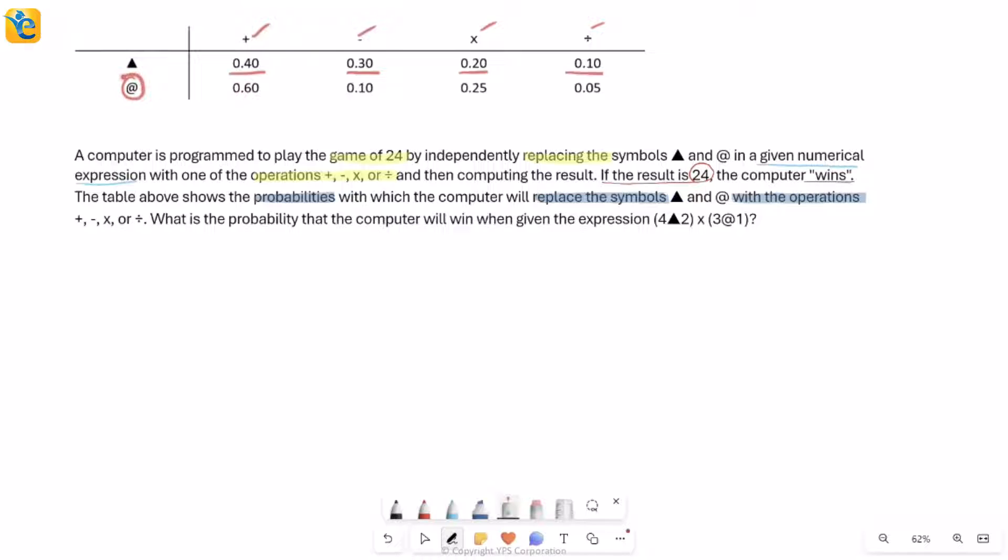Similarly, you can read the at the rate column as well. Now then, since we've understood how this is happening, read the last part. This is where it's asking you for a certain probability. What is the probability that the computer will win? Again, keep translating. Will win means that the result that the computer gets is 24. What is the probability that this happens when it is given this expression? So now this is the expression that we are feeding to the computer. It will replace these triangle and at the rate symbols by these operations with its own respective probabilities. You just want to see that out of all of those possibilities of all of these symbols that it could replace by, what is the chance of the computer really ending up with 24? So essentially, I'm going to see how is it that this thing can turn into a 24.